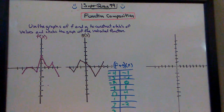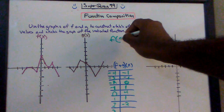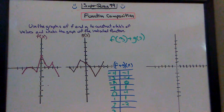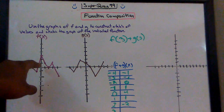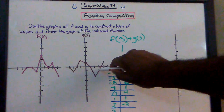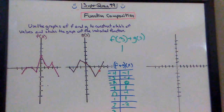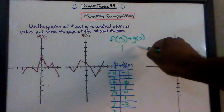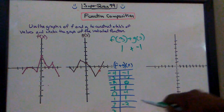How about x equals 3? f of 3 plus g of 3. What is the y value when x is 3 in the f function? y is 1. What is the y value when x is 3 in the g function? The y value there is negative 1. So the summation is 1 plus negative 1, which equals 0.